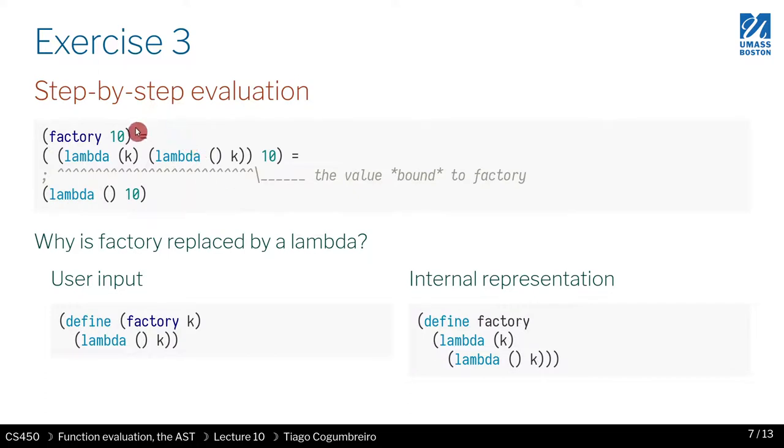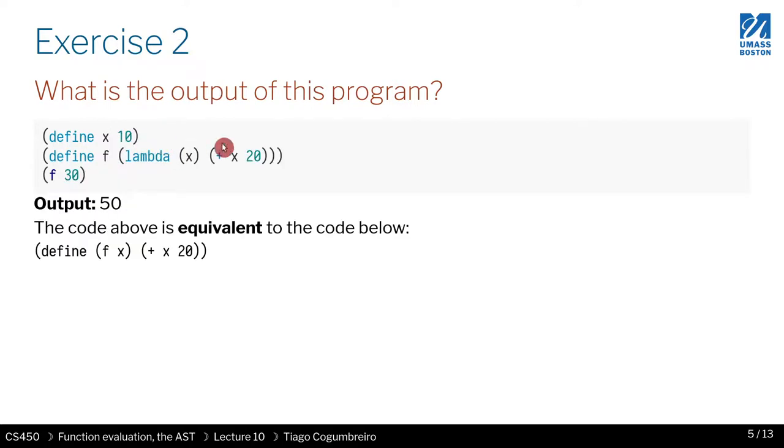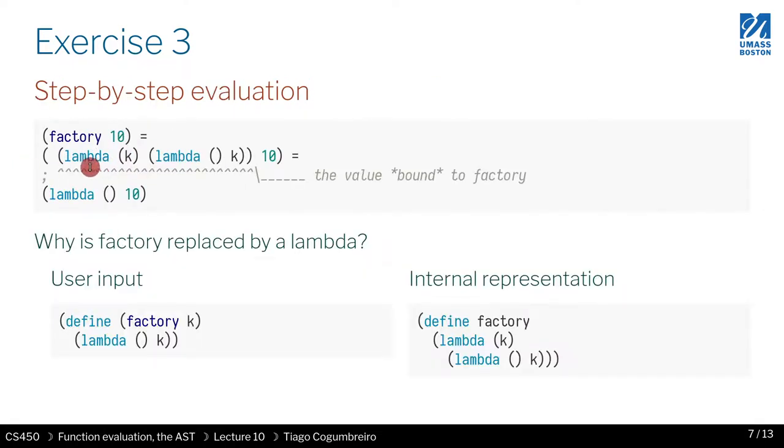Let's go for a step-by-step evaluation. First thing we need to do, we have a function call. We evaluate from left to right. On the left, you have a variable binding. What is factory defined, assigned to, or bound to? A function definition is just something with a lambda. There's two lambdas here: outermost takes k, returns innermost empty parameters. First thing we do, we just replace lambda by factory.